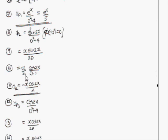Now, 1/D stands for integration. So we have (x/2)·(1/D)·sin2x = (x/2)·∫sin2x dx = (x/2)·(-cos2x/2). Therefore, yp2 = -x·cos2x/4.